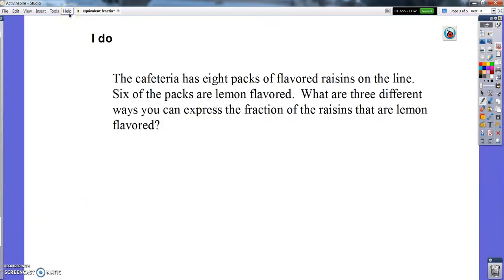So let me show you the set model strategy today. Here's a question: the cafeteria has eight packs of flavored raisins on the line. Six of the packs are lemon flavored, those are my favorite ones. What are three different ways you can express the fraction of the raisins that are lemon flavored? So six packs of lemon raisins out of eight packs total. Right off the bat, the first way I can do that is six out of eight packs, six eighths of the packs of raisins are lemon.